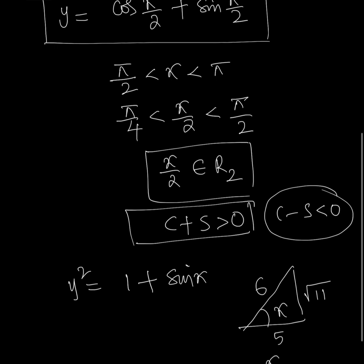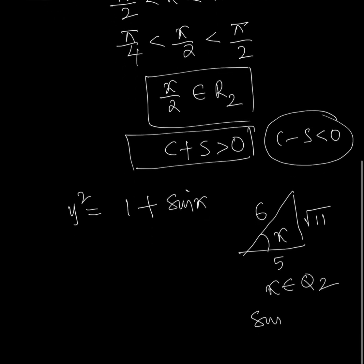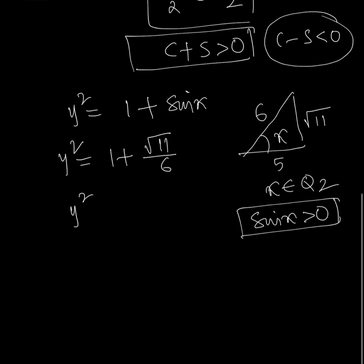Since x belongs to the second quadrant, sin x is positive. Therefore, y² = 1 + √11/6. Taking 6 as the common denominator, y² = (6 + √11)/6.